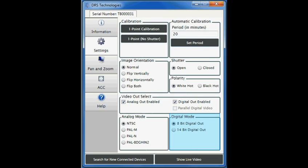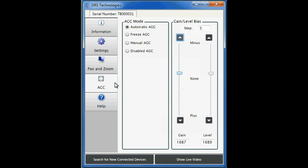Let's move on to AGC. The AGC provides some useful tools for improving image quality. Under AGC mode, we have four choices with radio buttons: automatic AGC, freeze AGC, manual AGC, and disable AGC. We'll leave this on automatic AGC for now and move on to gain level bias.